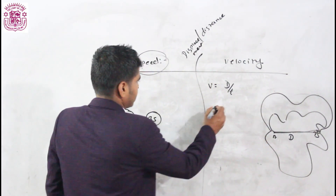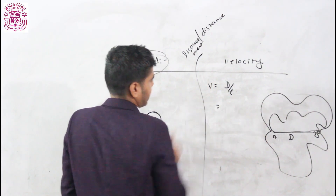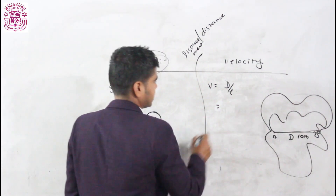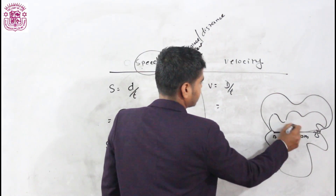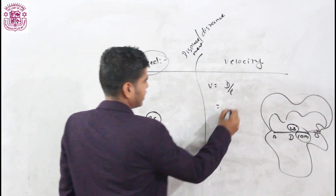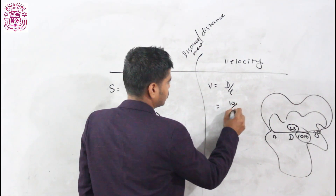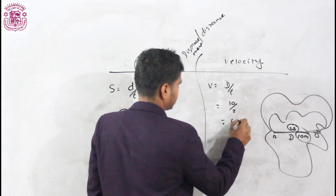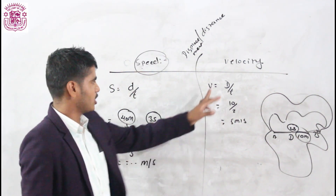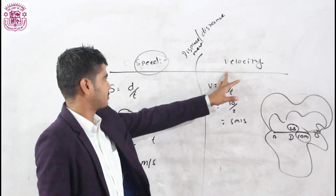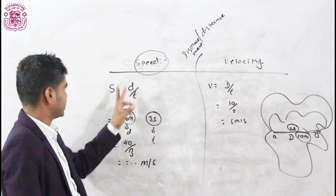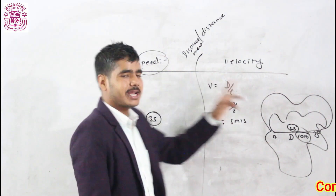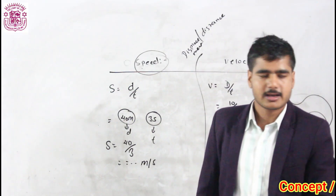Velocity is displacement per unit time. For example, if you are travelling 10 meters by the shortest path in 2 seconds, then 10 divided by 2 gives 5 meters per second. That is called velocity. So velocity is displacement per unit time, whereas speed is distance travelled divided by time.